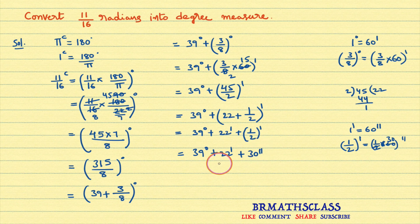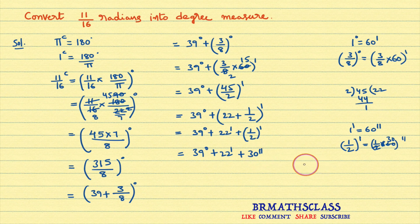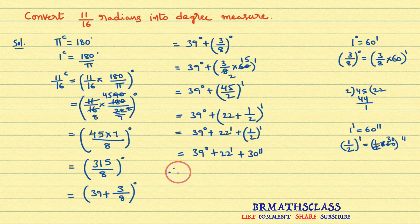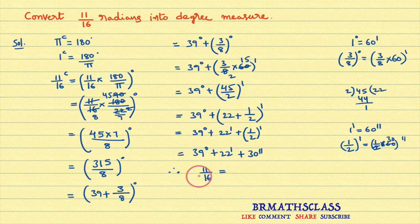We know that in degree measure, angle is divided into degrees, minutes and seconds — you need not convert further beyond seconds. So the final conclusion: therefore, 11 by 16 radians — if nothing is mentioned, the superscript C indicates radian measure — 11 by 16 radians equals 39 degrees 22 minutes 30 seconds.